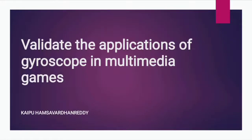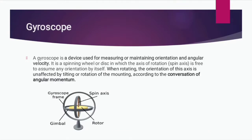Validate the applications of gyroscope in multimedia games. A gyroscope is a device used for measuring or maintaining orientation and angular velocity. It is a spinning wheel or disc in which the axis of rotation, or spin axis, is free to assume any orientation by itself. When rotating, the orientation of this axis is unaffected by tilting or rotation of the mounting, according to the conservation of angular momentum.